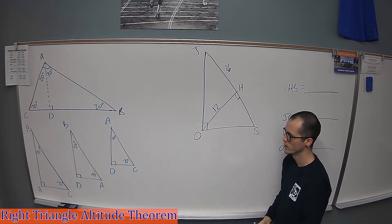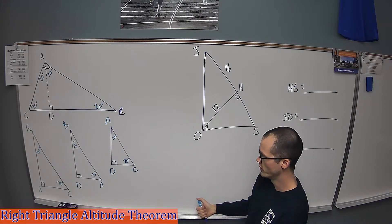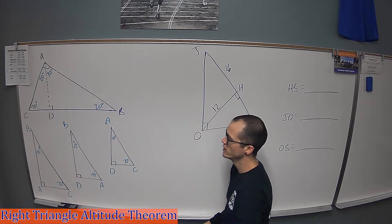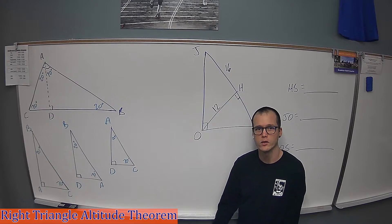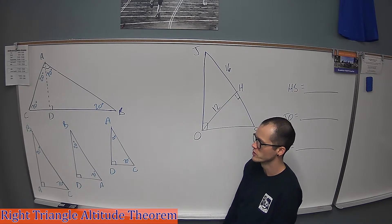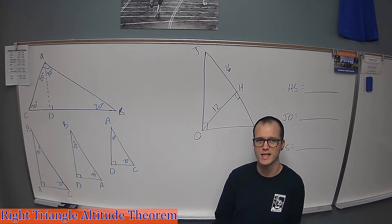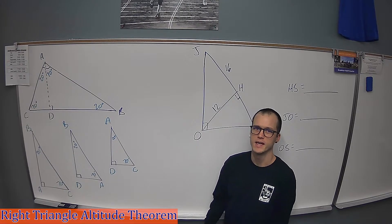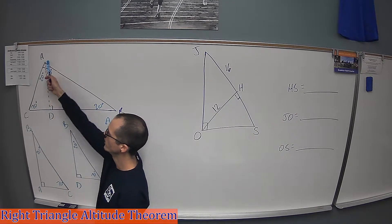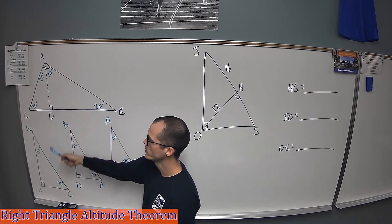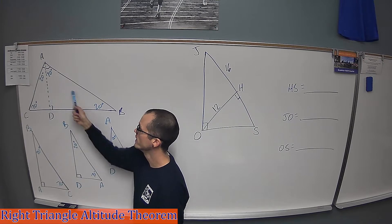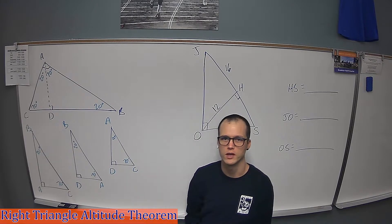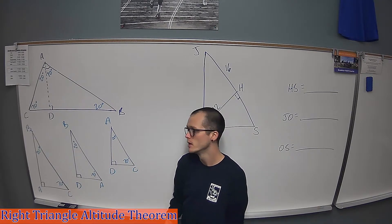For the big triangle, the right angle is at A, angle C is 70 degrees, and angle B is 20 degrees. All three separate triangles share the same three angle measures — they are similar triangles by Angle-Angle. They're the exact same shape at different sizes; they're dilations of each other. This is always going to be the case every single time you have a right triangle with an altitude dropped in.